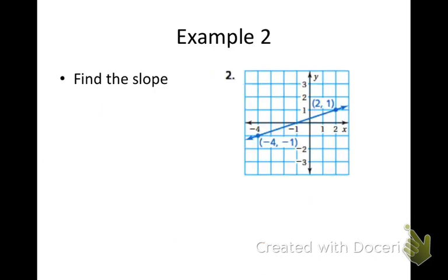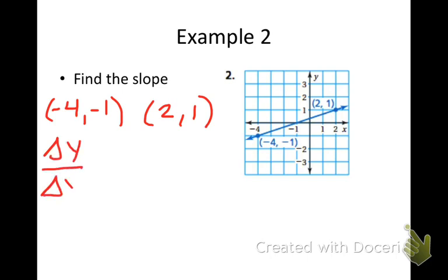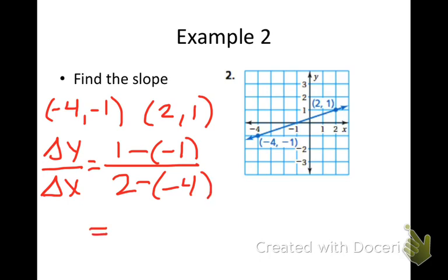Let's find another one. Again, we have two points, negative 4, negative 1 and 2, 1. So change in y over change in x would be y2 minus y1 all over x2 minus x1. So 1 minus a negative 1 would be like 1 plus 1. 2 minus a negative 4 would be like 2 plus 4. And we can simplify 1 over 3.